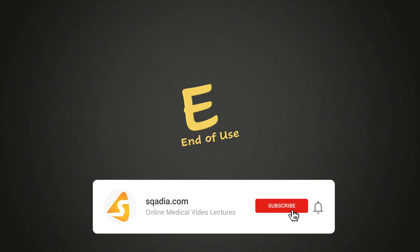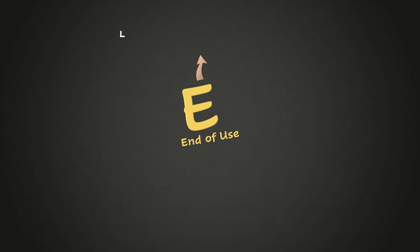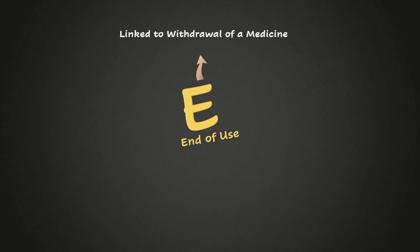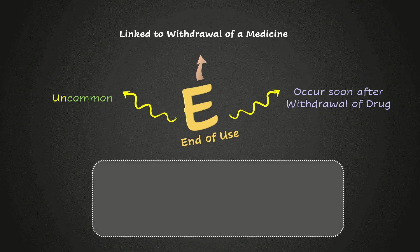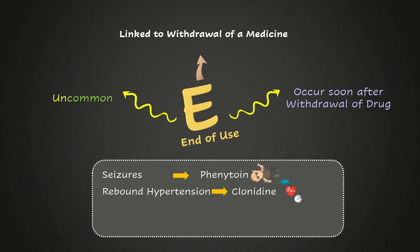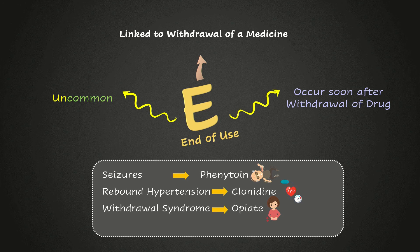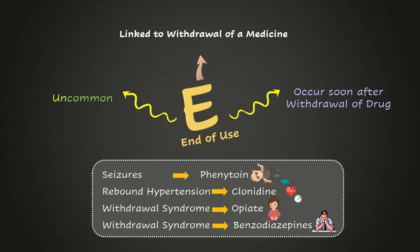Some reactions are linked to the withdrawal of medicine. Those effects are known as type E or end-of-use reactions. These are uncommon and occur soon after we withdraw a drug. For example, seizures after stopping phenytoin therapy — normally used as an anti-epileptic drug — or rebound hypertension after stopping clonidine therapy. There is also a withdrawal syndrome associated with opiates, which usually presents with nausea, vomiting, stomach cramps, diarrhea, goosebumps, and depression. Another withdrawal syndrome is associated with the discontinuation of benzodiazepines, known as benzodiazepine withdrawal syndrome, and presents with insomnia, anxiety, perceptual disturbances, and more.